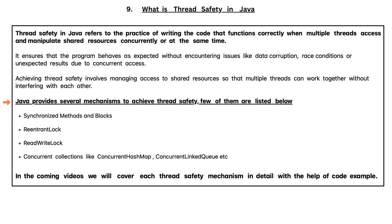Achieving Thread Safety involves managing access to shared resources so that multiple threads can work together without interfering with each other. Java provides several mechanisms to achieve thread safety, a few of which are listed below.